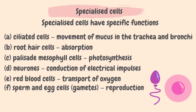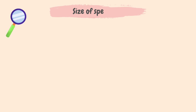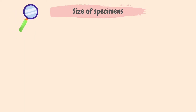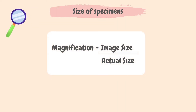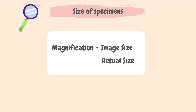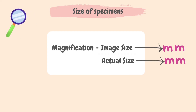Next we'll look at size of specimens. When we look at detailed images in our books — say an image of a cell — we know they have been magnified, or made bigger, so that we can actually see them. In reality, these objects can only be seen under a microscope. The formula we must know to determine by how much an image has been made bigger, or its magnification, is: magnification equals image size divided by actual size. Actual size and image size must be in millimeters — if given in any other unit, we must convert to millimeters.